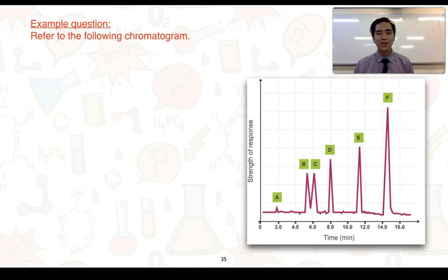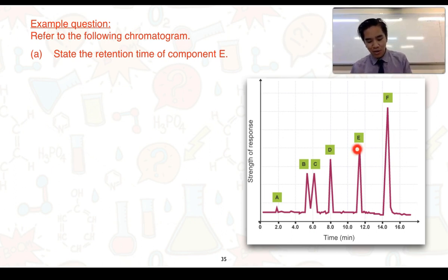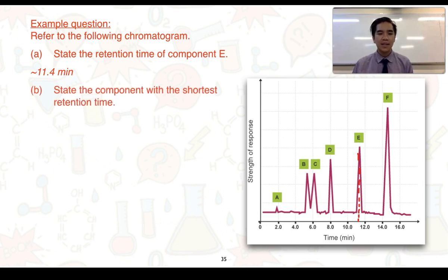Here is an example question. We need to refer to the following chromatogram on the right. Part A, state the retention time of component E. To get the retention time, we look at the very top of that peak and we mark down until we hit the x-axis and we want to estimate as close as possible what that time is. From this chromatogram, I've suggested that the retention time is approximately 11.4 minutes. Part B, state the component with the shortest retention time. Keeping in mind time increases from left to right, that would be component A.